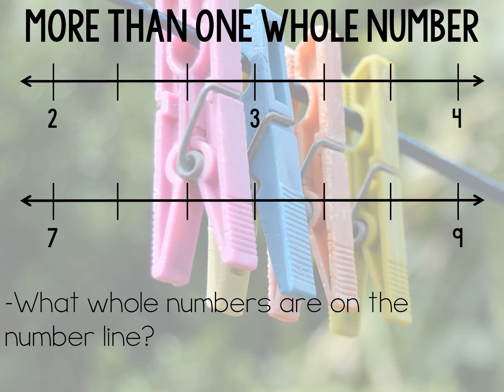What do we do when there's more than one whole number on the number line? In the first example scenario, there are three whole numbers — remind students that we only count the spaces between consecutive, side-by-side whole numbers, not the entire number line. In the second example, students need to recognize that the labeled whole numbers are not consecutive. Once they realize that, they can place the missing whole number in the middle and count the spaces between consecutive whole numbers. Show students examples and discuss mistakes they'd make by counting spaces between non-consecutive numbers like seven and nine.